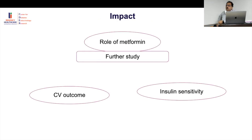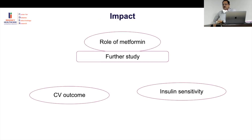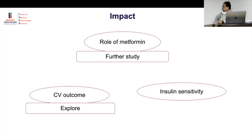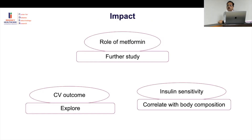We should consider metformin in non-lean children with type 1 diabetes, particularly those with BMI above the 50th percentile. However, this is only 90 children in one study — further research is needed. More studies on cardiovascular outcomes and correlation of insulin sensitivity with body composition are required before widespread adoption.